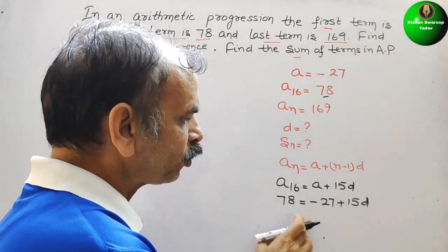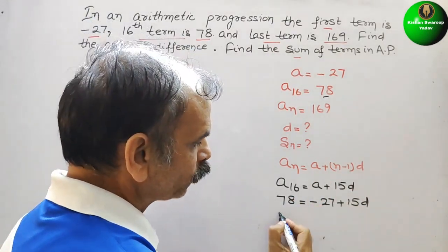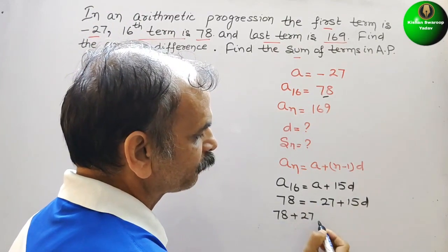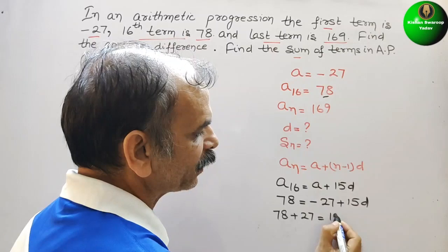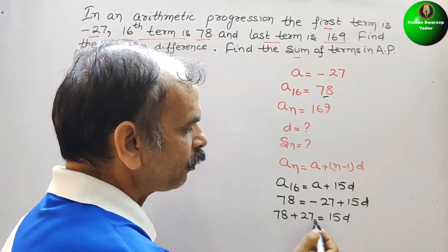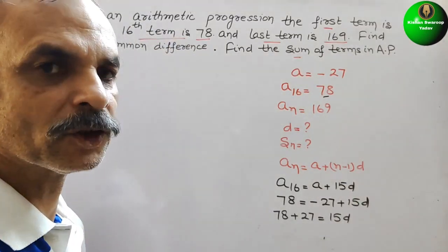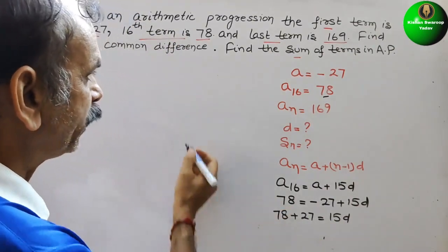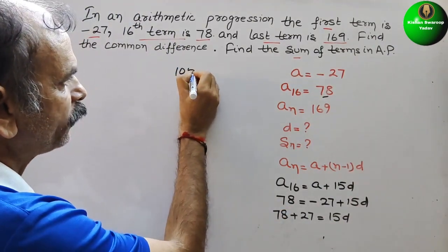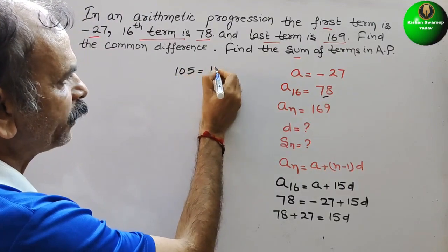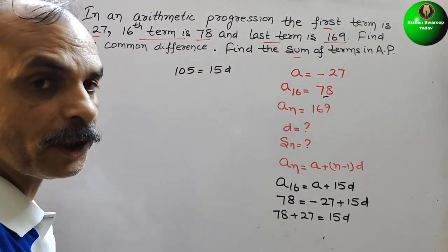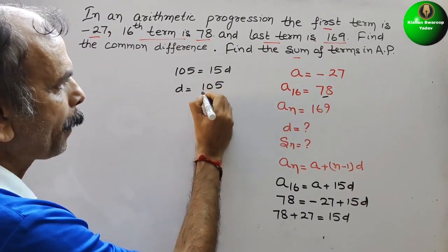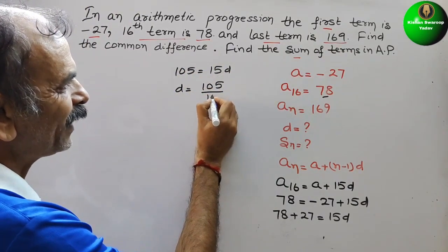Bring this minus 27 to this side. So here it will come as 78 plus 27 equals 15D. Solve this. 78 plus 27 is what? 105. So here comes 105 equals 15D. So what is your D?